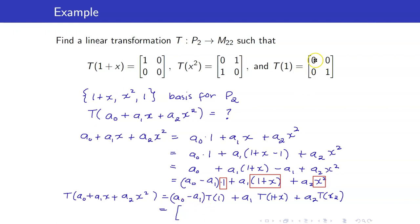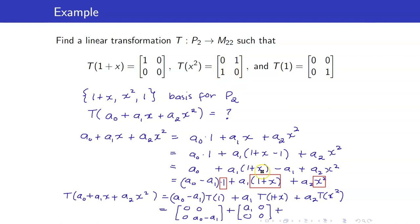So T of 1 is (0, 0, 0, 1), times (A0 - A1), that's (0, 0, 0, A0 - A1). Plus T of (1+x) is (1, 0, 0, 0), times A1, giving (A1, 0, 0, 0). Plus T of x² is (0, 1, 1, 0), times A2, giving (0, A2, A2, 0). This is now equal to (A1, A2, A2, A0 - A1).